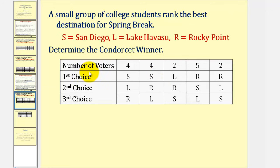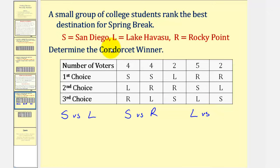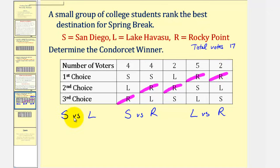Returning to the spring break example, we know the plurality winner was San Diego with a total of eight votes. Now we want to find the Condorcet winner by doing one-to-one comparisons among the three options: San Diego versus Lake Havasu, San Diego versus Rocky Point, and Lake Havasu versus Rocky Point. To compare San Diego and Lake Havasu, we ignore Rocky Point. San Diego is preferred over Lake Havasu four plus four plus five times, which is thirteen. So San Diego wins over Lake Havasu thirteen to four.